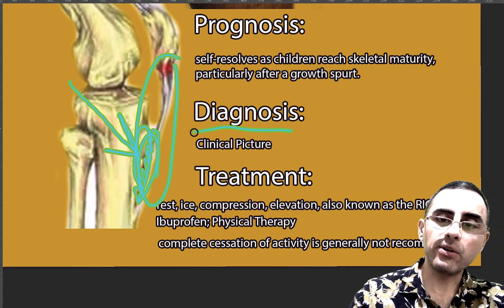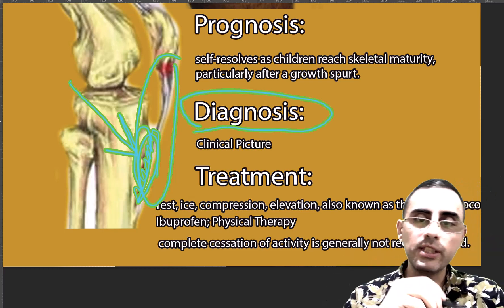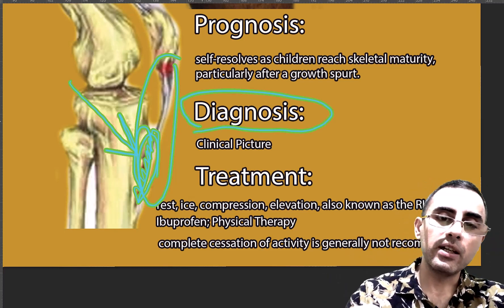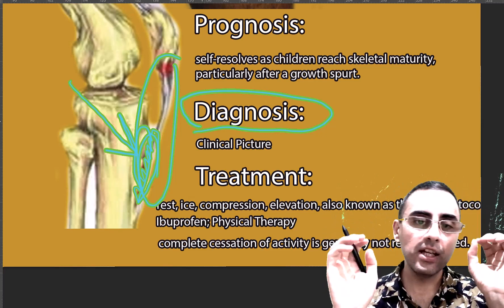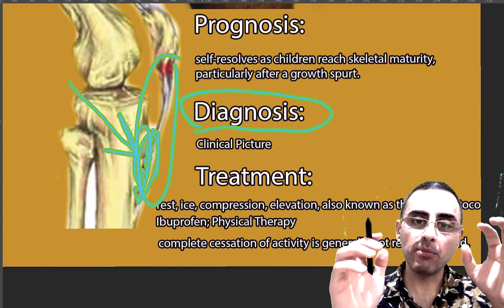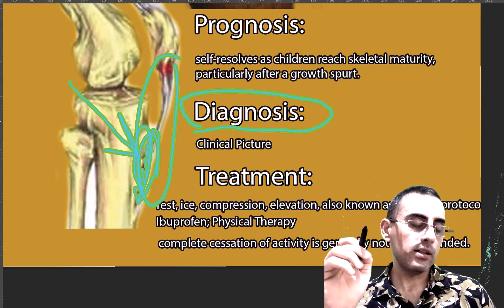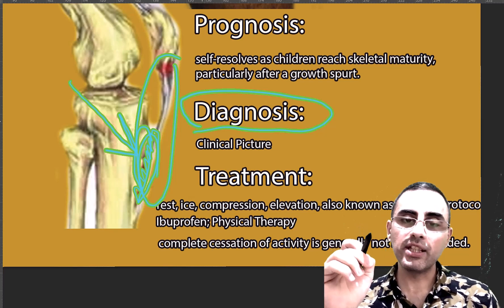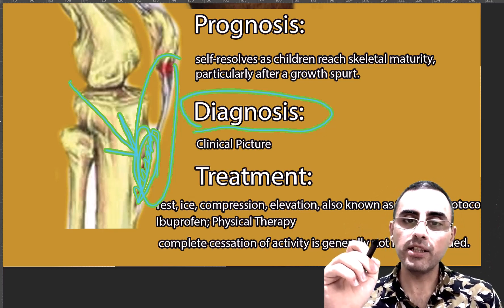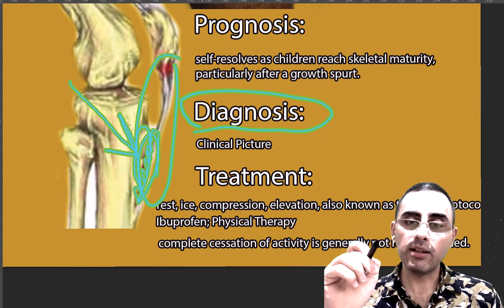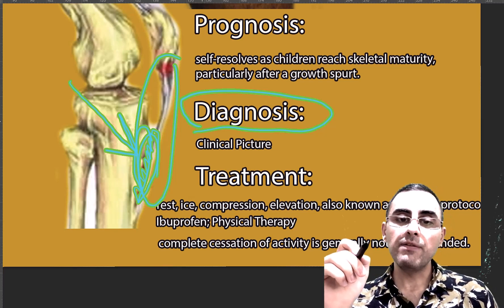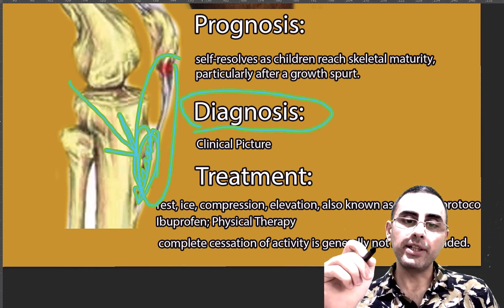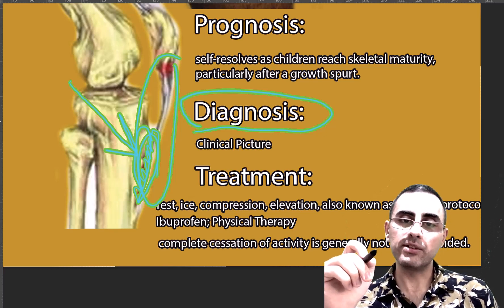Diagnosis is usually based on the clinical picture — no need for X-ray or other imaging techniques. If there is serious suspicion of another disease, imaging is possible. But usually, pain just below the kneecap exacerbated during exercise, in a child who is an athlete or physically very active, and relieved by rest and non-steroidal anti-inflammatory drugs, is usually Osgood-Schlatter disease.